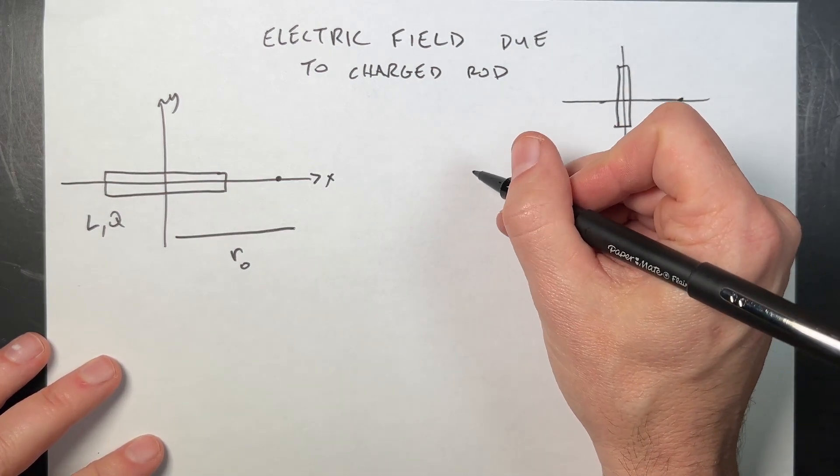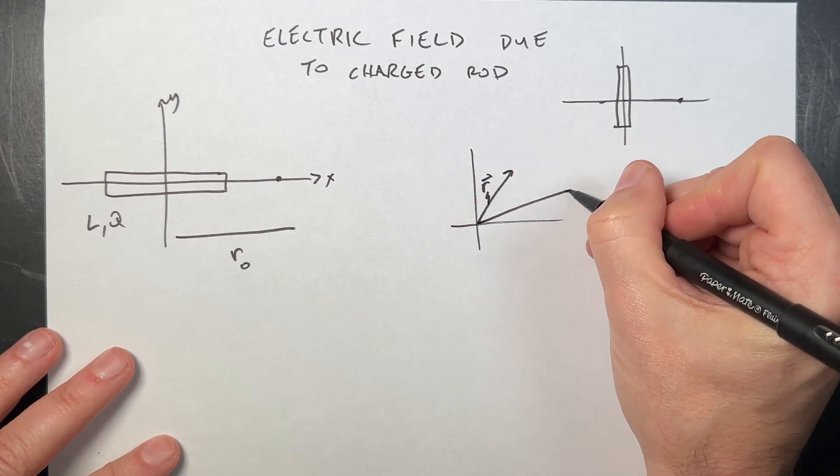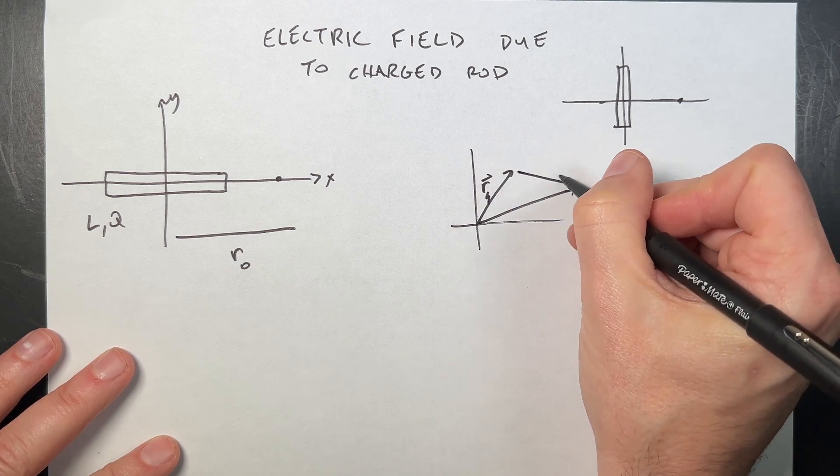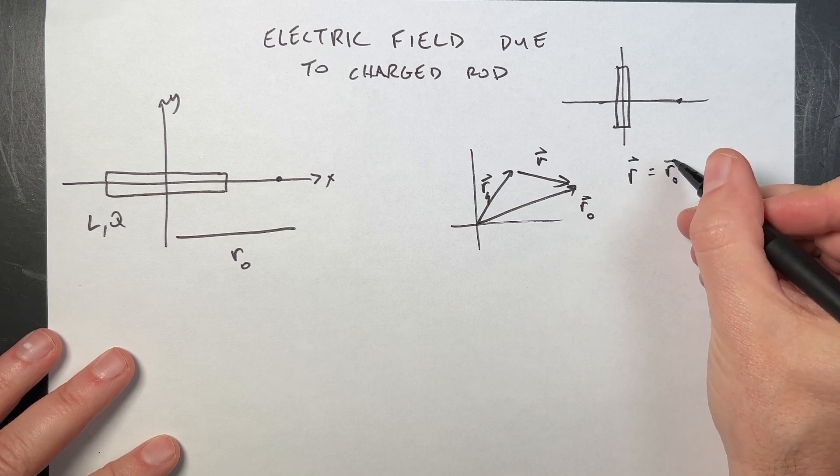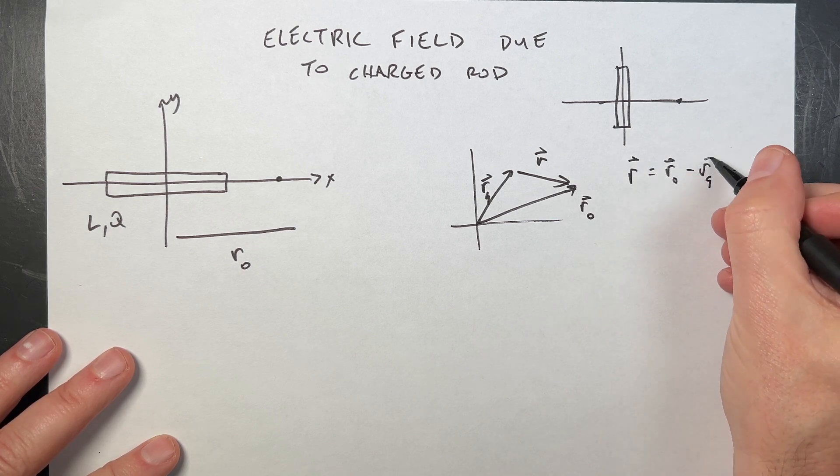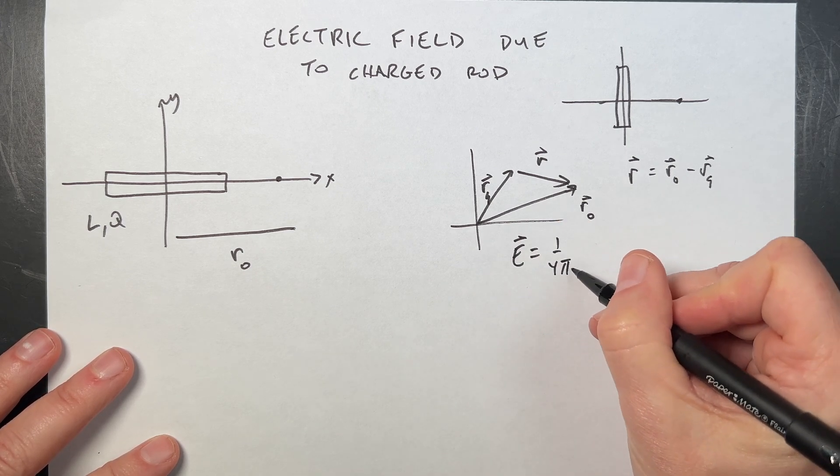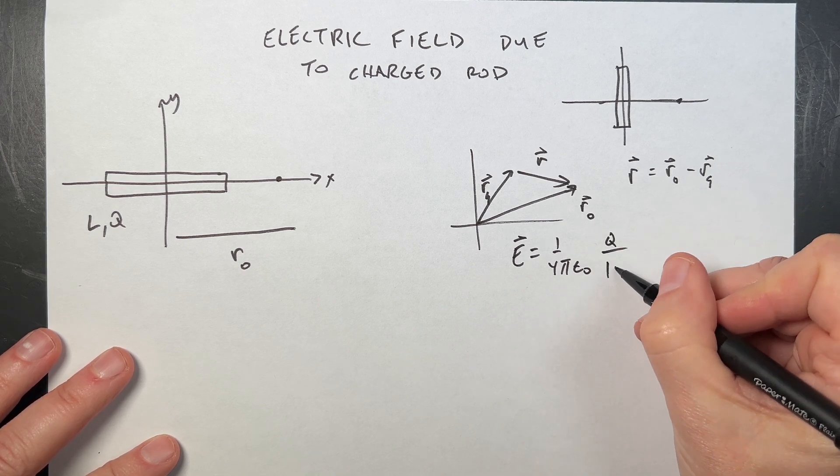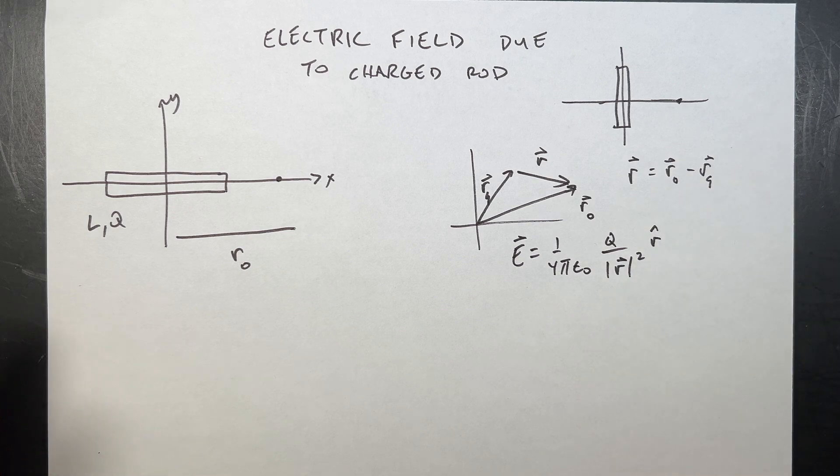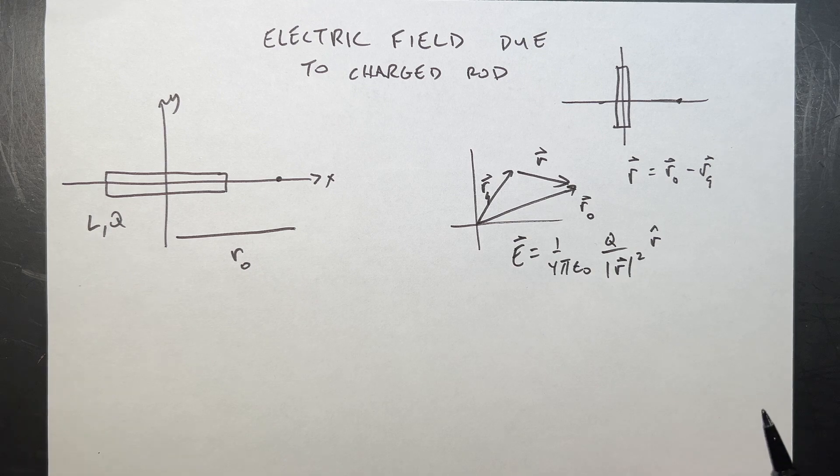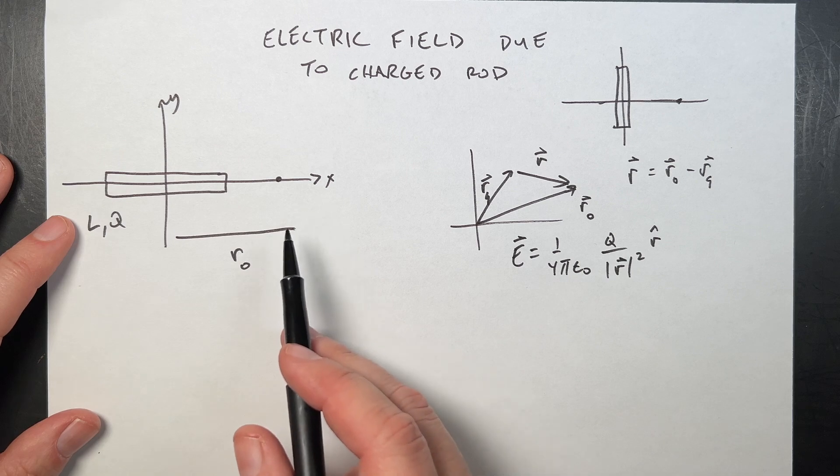Just remember that if I have a point charge at RQ and I want to find the electric field at point R0, I need to find this vector R from RQ to R0, which would just be R0 the vector minus RQ. Once I do that, the electric field due to that one single point charge is 1 over 4π epsilon naught Q over the magnitude of R squared R hat. And then if you have more than one point charge, you just add them all up.